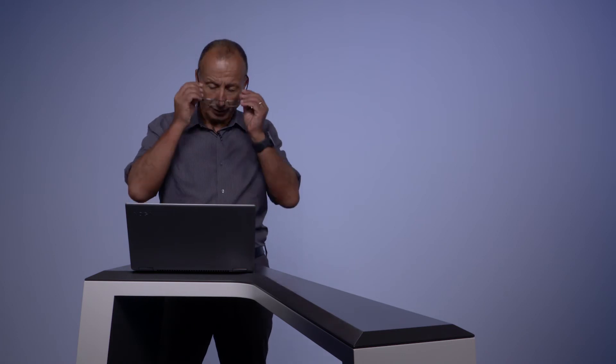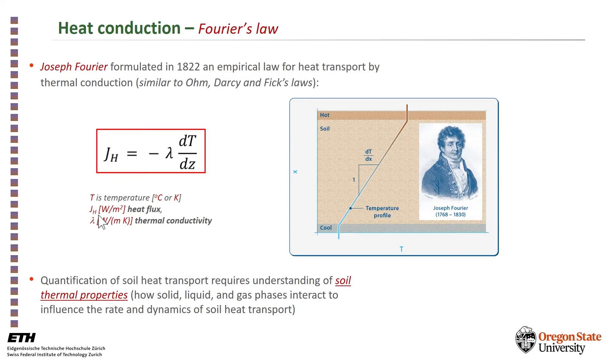The primary mechanism of transport in soil is conduction; the other mechanisms may operate, but conduction is the most important one. Conduction is described by Fourier's law, developed in 1822. It's an empirical law of transport, very similar to Darcy's law or Ohm's law. It states that the flux of thermal energy in watts per square meter is a linear function of the temperature gradient in space and a thermal conductivity coefficient expressed in watts per meter per degree Kelvin.